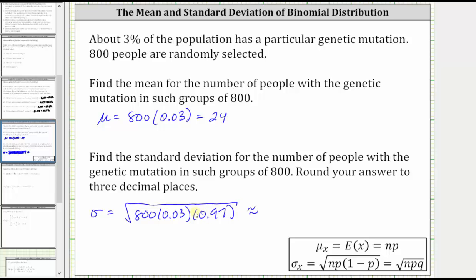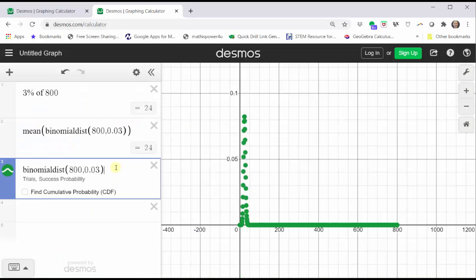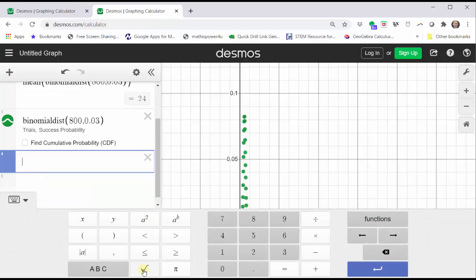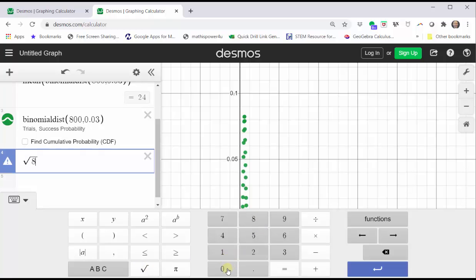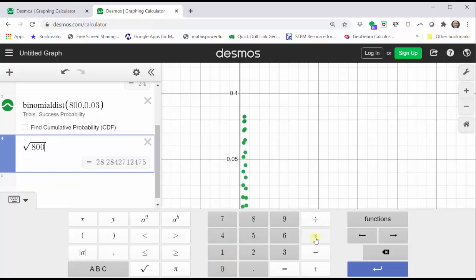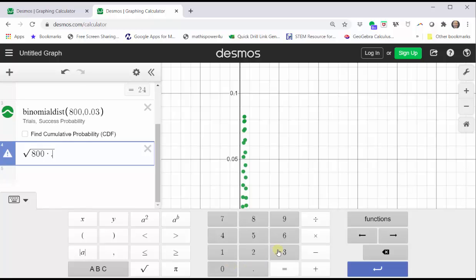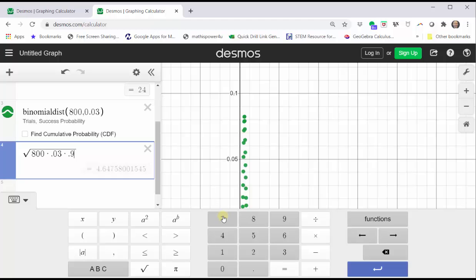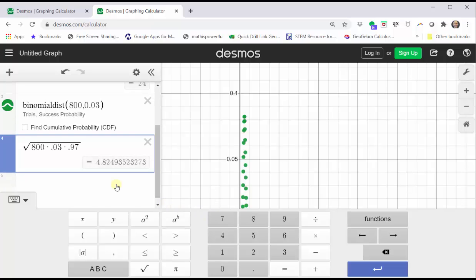Let's evaluate this on Desmos and also use the functions to check our work. Let's click in cell four, open the Desmos keypad. Notice the square root here next to the ABC button. Click square root. Then we have 800 times 0.03 times 0.97. To three decimal places, we have approximately 4.825.